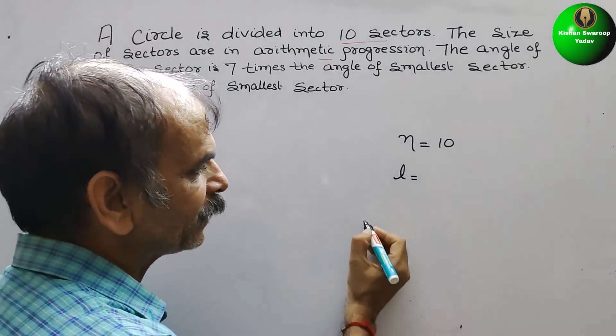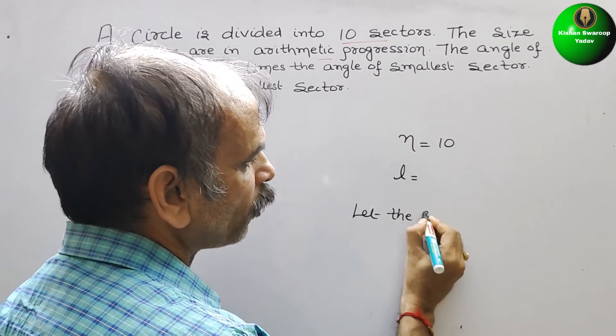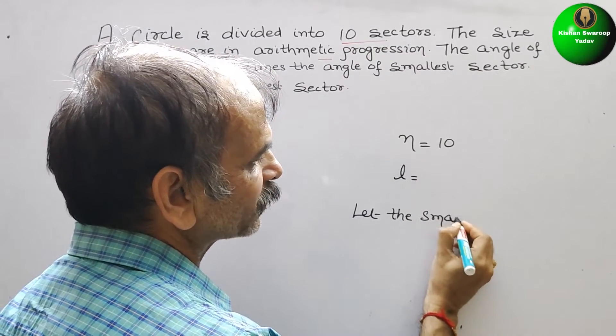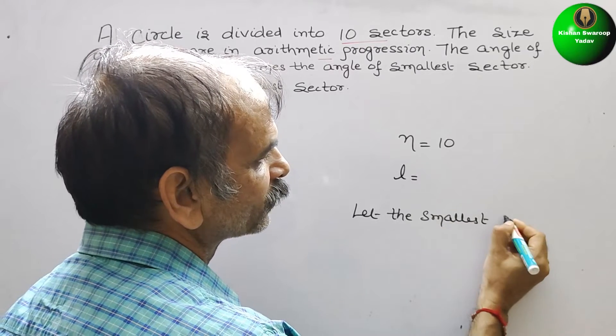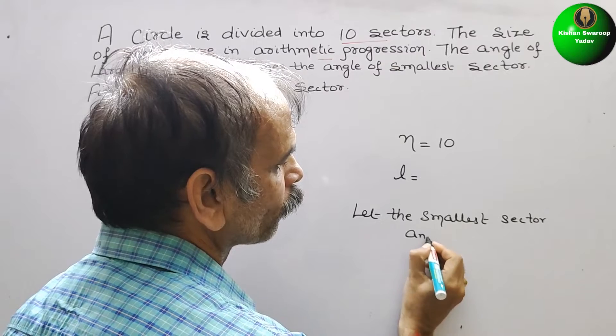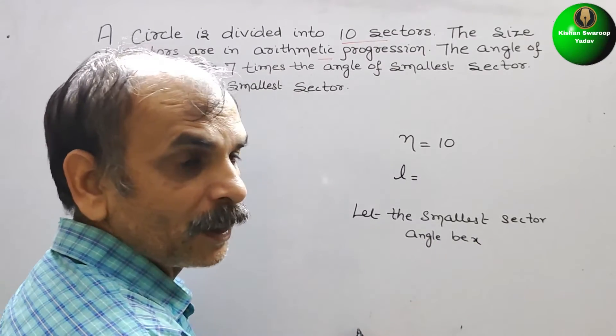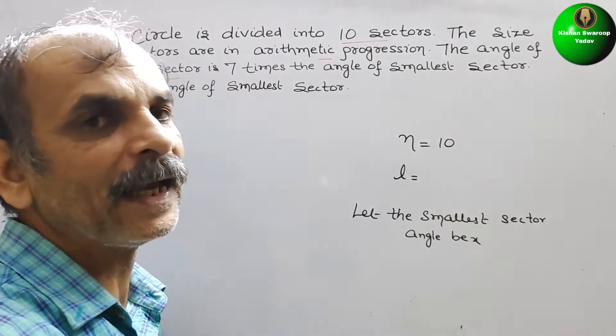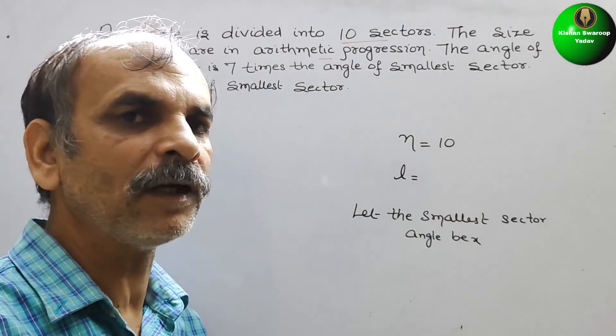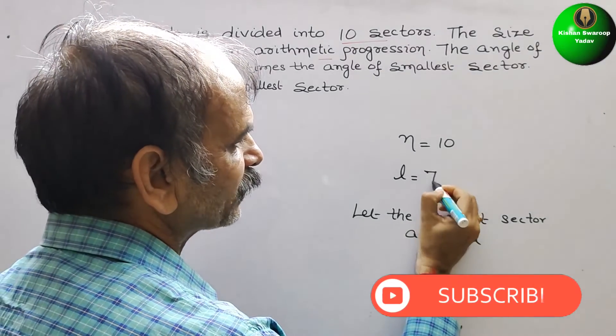That is 7 times of the smallest sector. So now we will take, let the smallest sector be x, sector angle be x. If the smallest sector angle is x, the largest will be 7x.